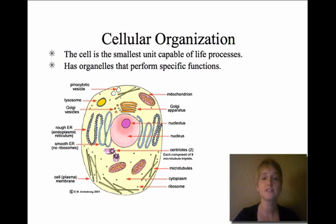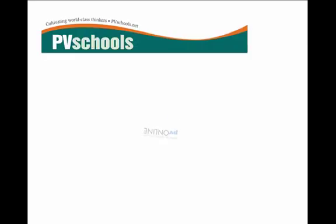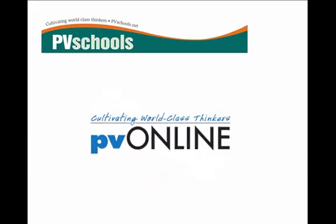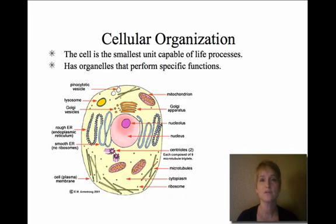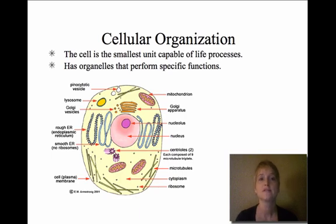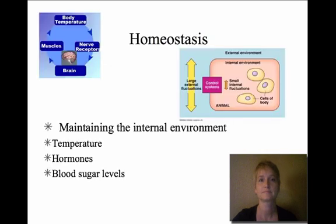The first one is cellular organization, and this just means that every living thing uses cells, and those cells have specific organelles — things inside of them that do jobs that help keep the cell alive. All cells come from previous cells, so there's no cell that just pops into existence. They have to be reproduced from a former cell.